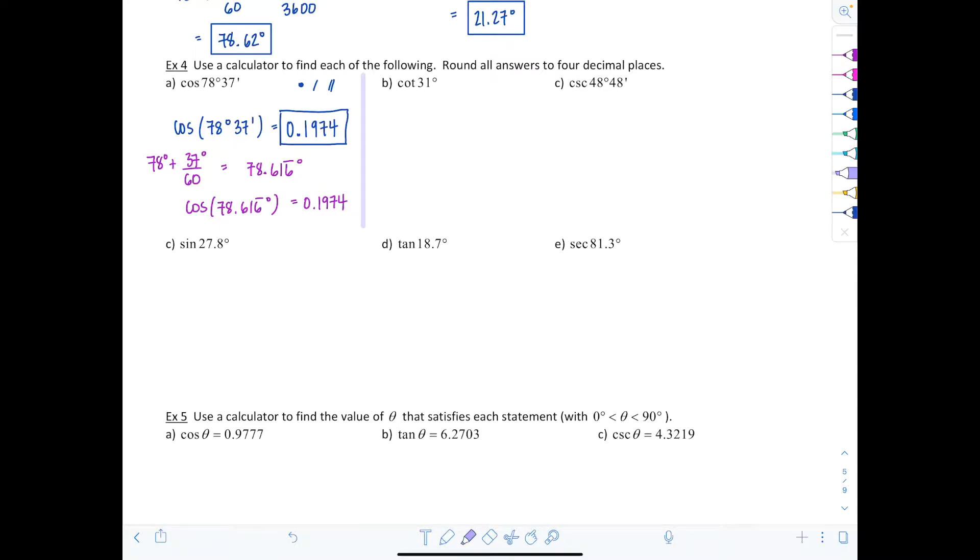Let's try another one. We have cotangent of 31 degrees. Most calculators only have a button for sine, cosine, and tangent. If we need cotangent, remember cotangent is 1 over tangent of that angle. So you're going to take 1 divided by tangent of 31 degrees. Not 1 over 31 degrees.